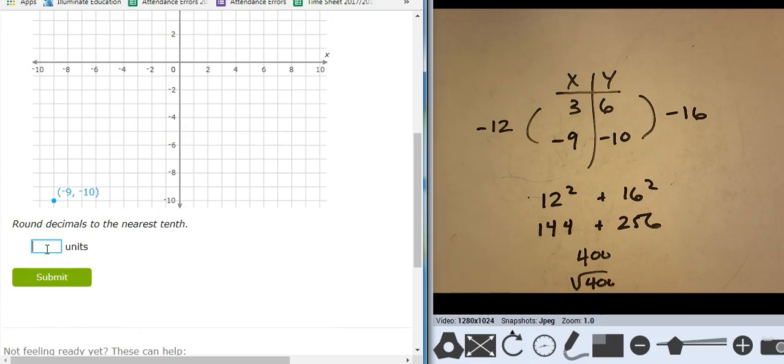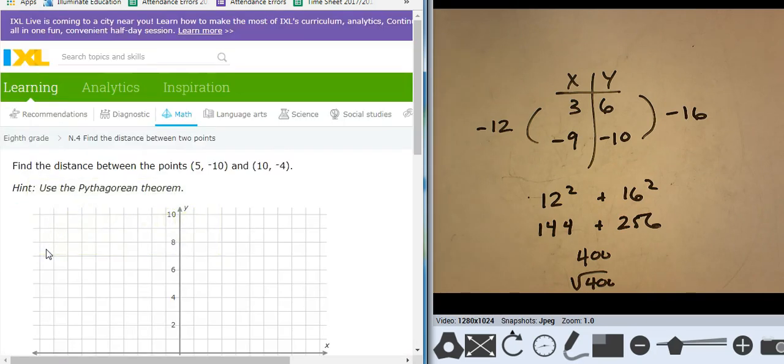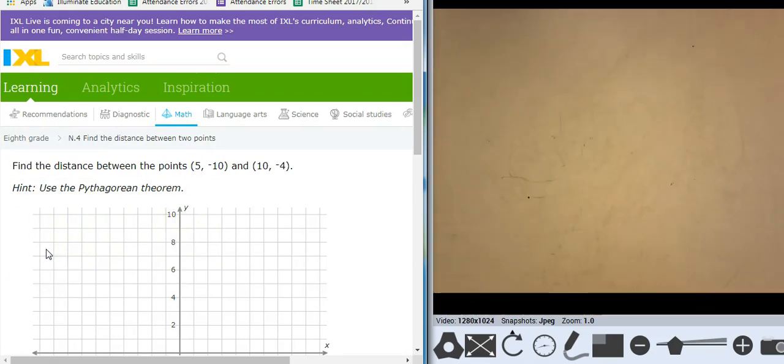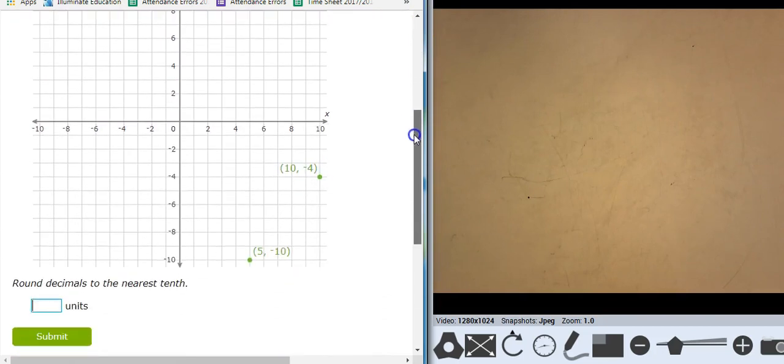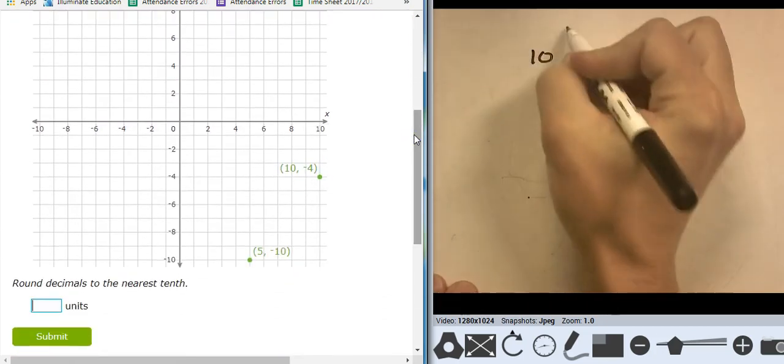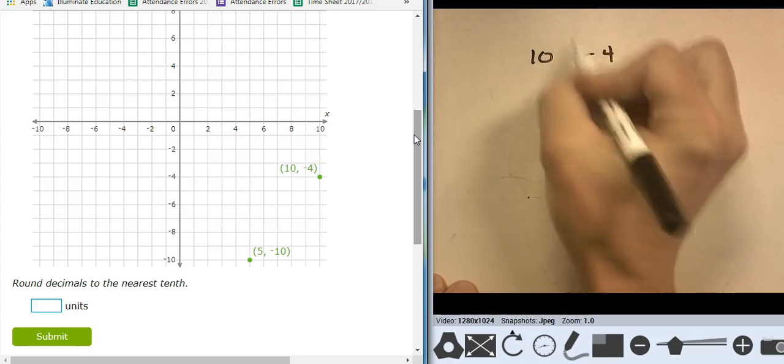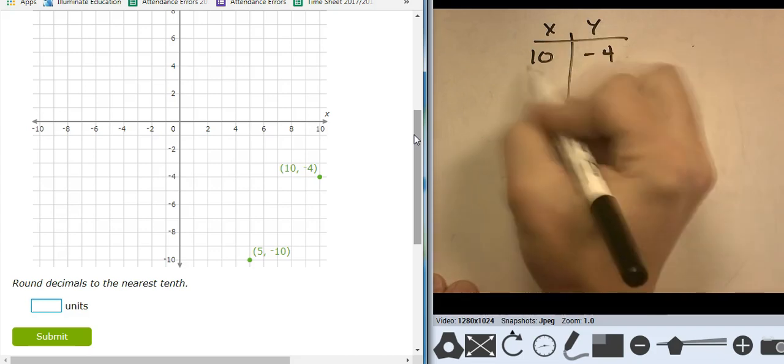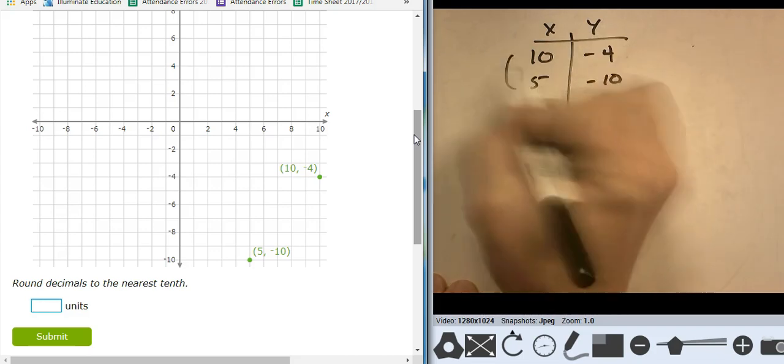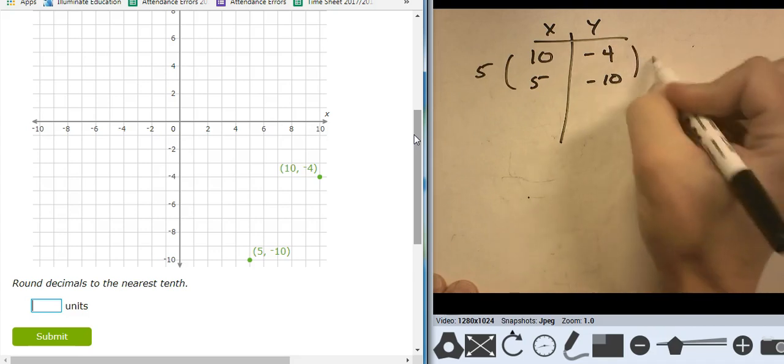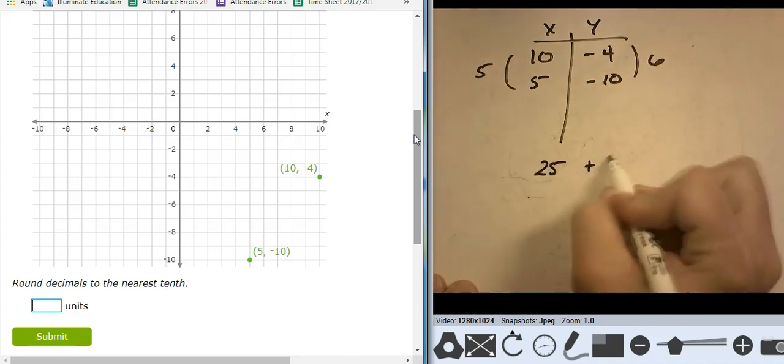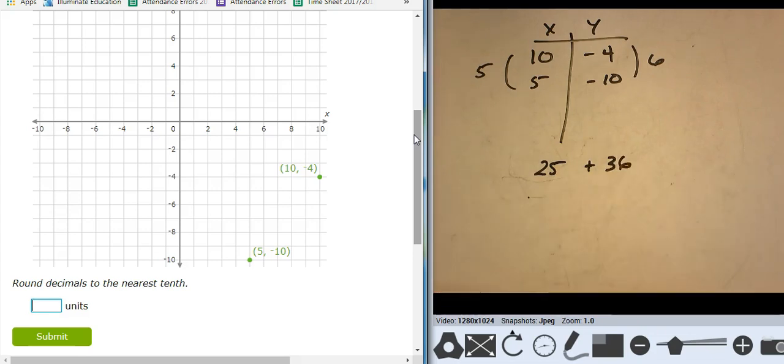So the distance between these two points is 20 units. I'm going to check that out. 144 plus 256, 400. Yes, 20 units. So I'm going to start using that method instead of drawing out the triangle. So I'm looking at 10, negative 4, 5 and negative 10. This was a change of 5, negative 5. And this was a change of 6. So I'm looking at 25 plus 36. 25 plus 36 is 61. Square root of 61 is 7.8. Notice it says round to the nearest tenth. So I'm going with 7.8.